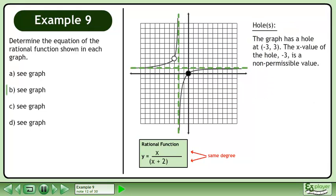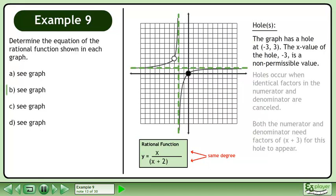The graph has a hole at negative 3, 3. The x-value of the hole, negative 3, is a non-permissible value. Holes occur when identical factors in the numerator and denominator are cancelled. Both the numerator and denominator need factors of x plus 3 for this hole to appear.